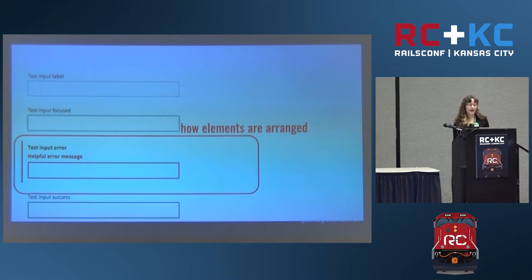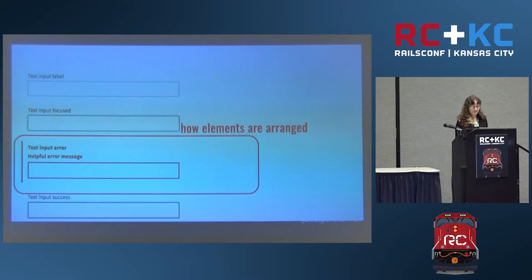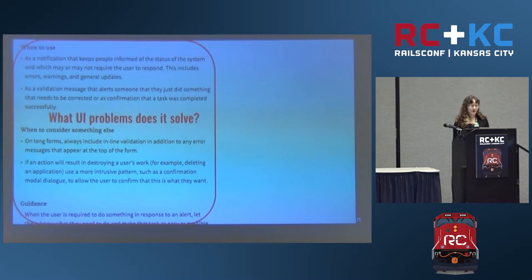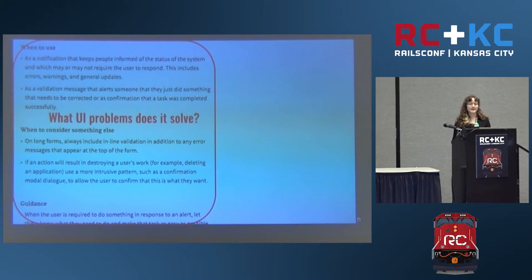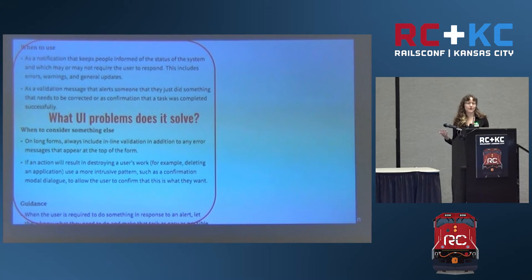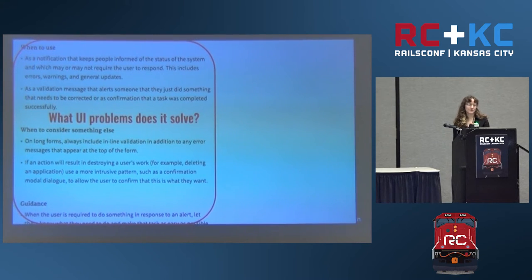You can talk about how widgets are arranged — are the labels next to the form fields or on top of them? Where do error messages go? We can also talk about what UI problems a given widget is useful for solving. You can say, use carousels if you need to display several bits of cards, but otherwise just use a grid. Or you can say, only display notifications if they're relevant to the user's current goal.